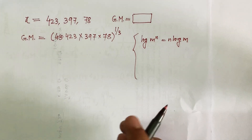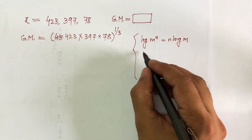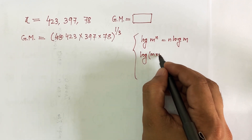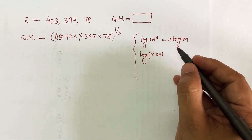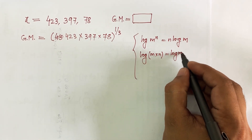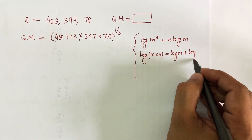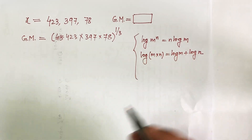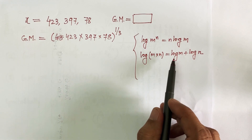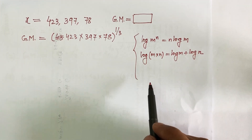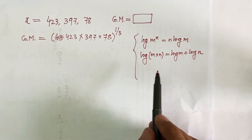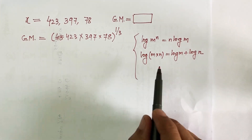The second principle: if you have multiplication of two or more numbers, log(m × n) can be converted into an addition problem: log(m) + log(n). If there are three numbers m, n, and r, you write log(m) + log(n) + log(r). This extends to four or five numbers. These are the two fundamental principles I'm going to use.